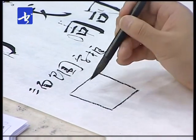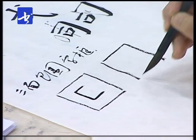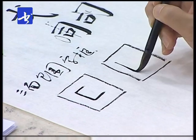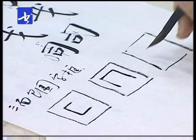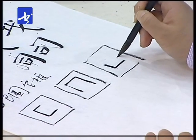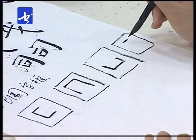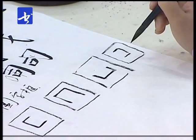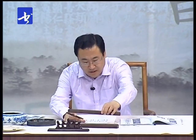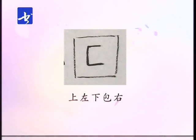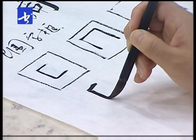咱们再看三面包围的字框。三面包围有三种情况：上左下包右、上右包下，还有左下右包上。没有上右左这样的包围形式，只有这三种情况。咱们逐个来看，第一种是上左下包右。